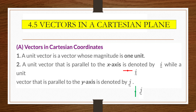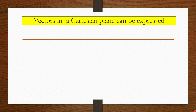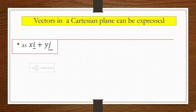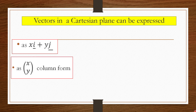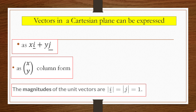Vectors in a Cartesian plane can be expressed as xi plus yj, or in column form, similar to translation. In vector notation, modulus indicates magnitude. The magnitude of vector i equals the magnitude of vector j equals 1 — remember, a unit vector has magnitude 1 unit.